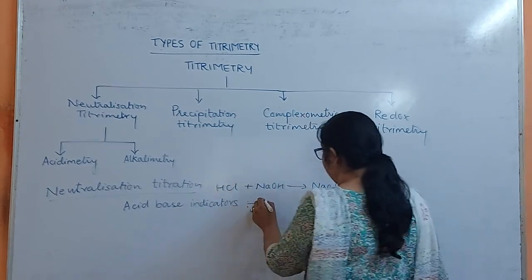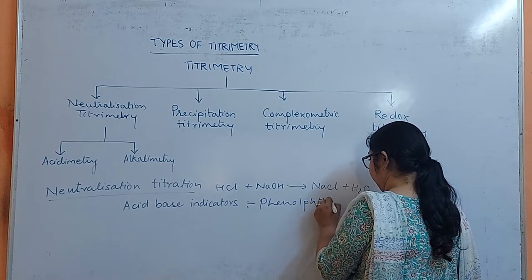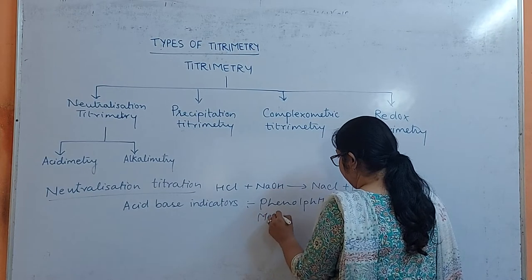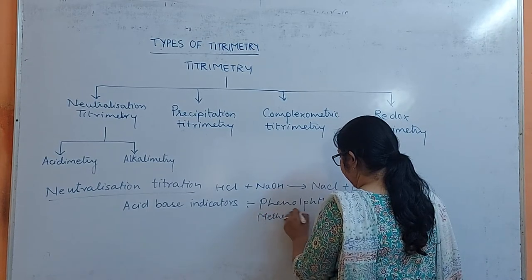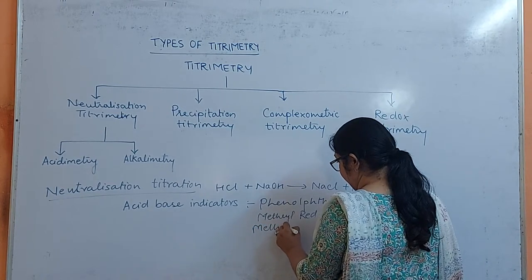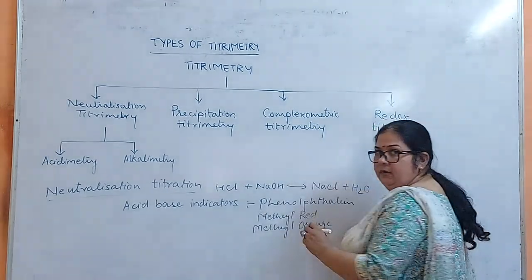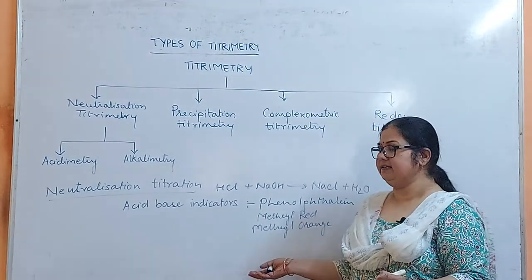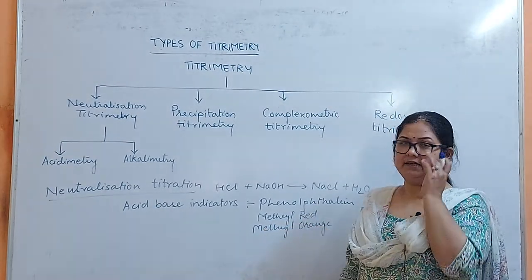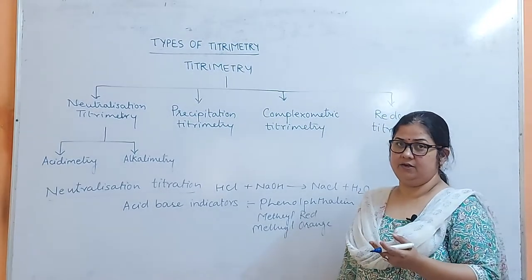For example, you can always use phenolphthalein, or you can use methyl red, methyl orange. These are the indicators to be used. Now if you do not have an indicator, you can always go for instrumental methods for the determination of end point or equivalence point, like conductometry, potentiometry, etc.